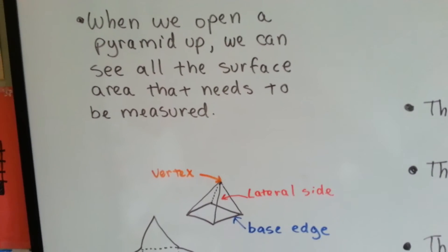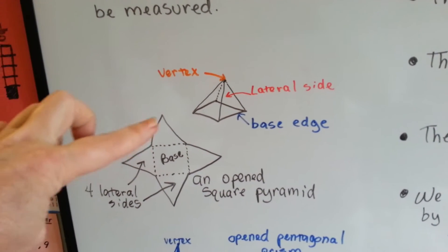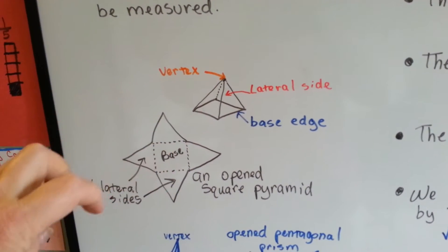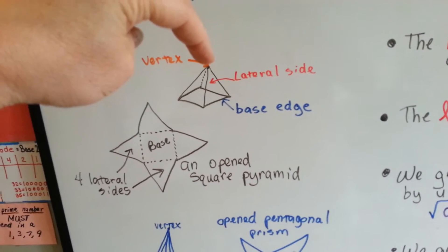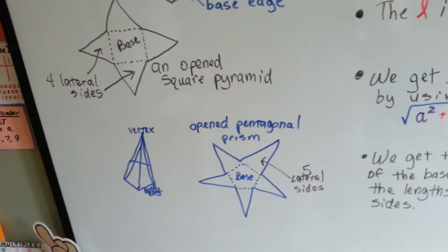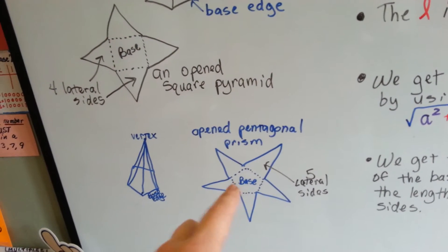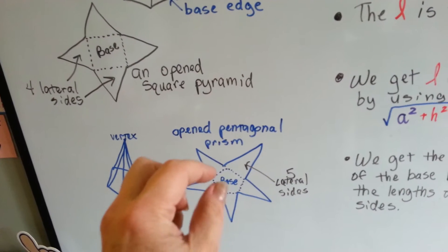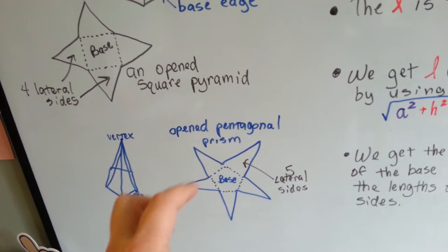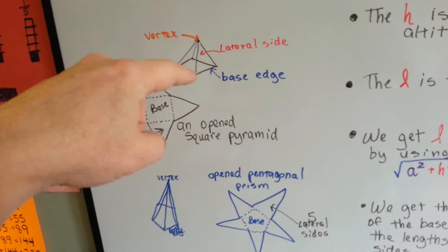When we open a pyramid up, we can see all the surface areas that need to be measured. So for a square pyramid, if you opened it up, it would look like this, and these are the lateral sides, and the center is the base, and you can see the fold lines where if you folded it up, it would turn into a pyramid with a pointy little vertex on the top. For the pentagon one, it's got a pentagon base. The prism is named after the shape of its base, so you can have a hexagon, a hexagonal prism. This one has five sides for the pentagon, so it's got these five lateral sides like a star coming out, and if you bring them all up and you fold them on these dotted lines, you would have this pyramid with a pentagon for its base.